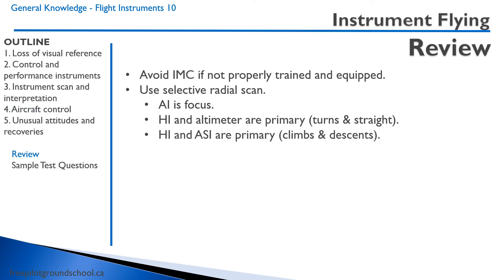Always avoid instrument meteorological conditions if not properly trained and the aircraft is not properly equipped. However, if you do find yourself in IMC, use a selective radial scan — the attitude indicator is the focus. The heading indicator and altimeter are primary for turns and straight-and-level flight, and the heading indicator and airspeed indicator are primary for climbs and descents.